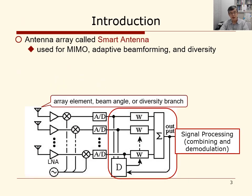As an introduction: as everybody knows, an antenna array, especially called the smart antenna — for example, MIMO, adaptive array, adaptive beamforming (sometimes called digital beamforming), diversity reception, maximum ratio combining, selection combining, etc. — you know very well these smart antenna techniques.